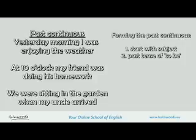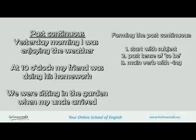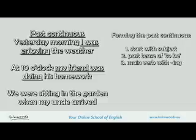After the subject and the auxiliary verb to be, you have to add the main verb ending with -ing. So, for example, enjoying, doing, sitting. We have now got the main part of the sentences with the past continuous: I was enjoying, my friend was doing.